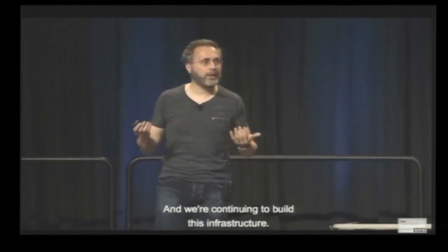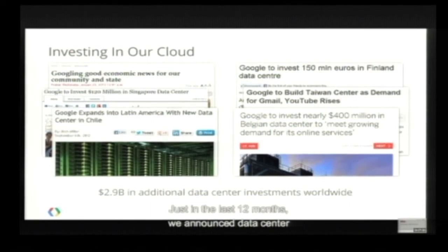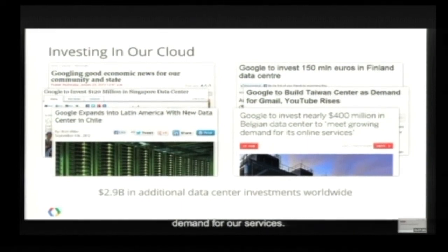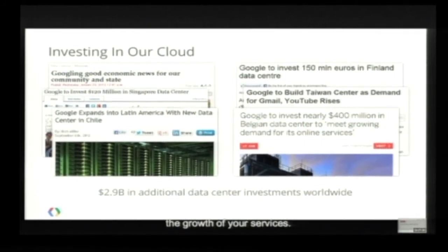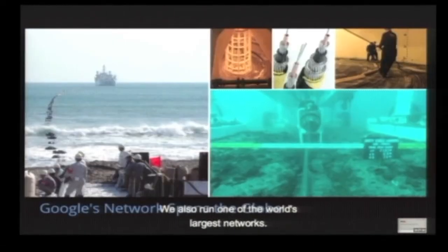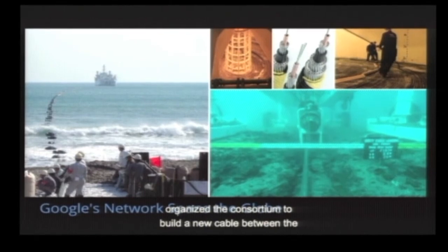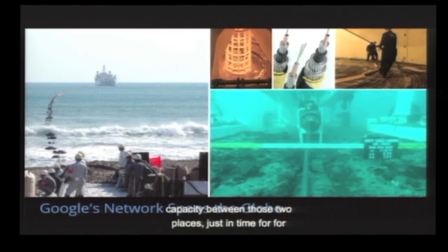We're continuing to build this infrastructure. Just in the last 12 months, we announced data center expansions in the US, Europe, Asia, and South America for over $2.9 billion — we see a lot of growth in demand for our services and wanted to make sure there's enough room for the growth of your services. We also run one of the world's largest networks — the only company that's not an ISP to own and operate submarine cables. Here you see the Unity cable, where we organized a consortium to build a cable between the US and Japan serving several terabits of capacity.